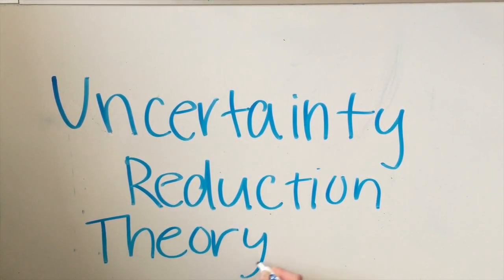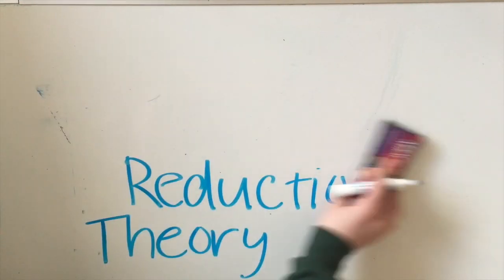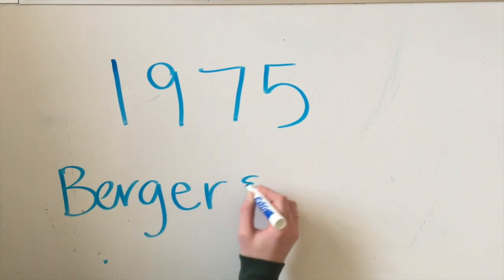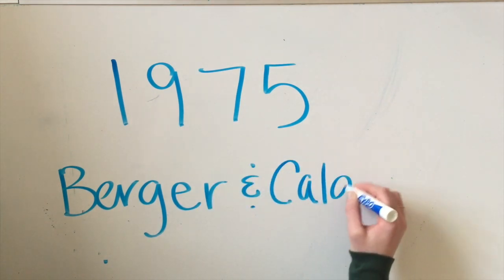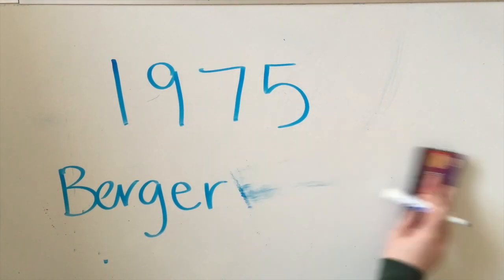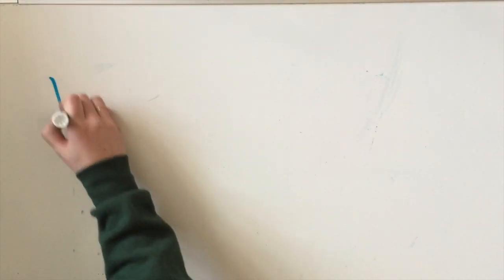The uncertainty reduction theory was developed in 1975 by Berger and Calabrese. It states that our primary compulsion during initial interactions is to reduce uncertainty about our communication partners by gathering enough information about them so their communication becomes predictable and explainable.